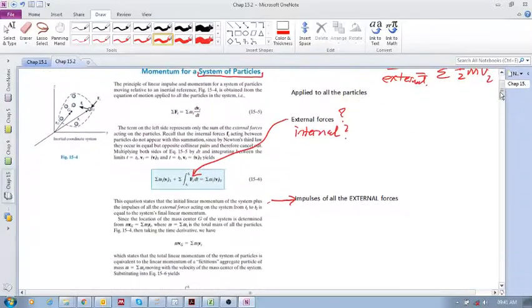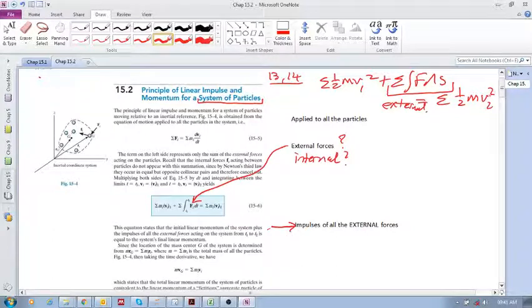We will do some examples on this later. But that's basically the most important principle. It's applied to all the particles. And we only consider the external forces to apply any impulses. This equation states that the initial linear momentum of the system plus the impulses of all the external forces acting on the system from T1 to T2 is equal to the system's final linear momentum. So I think that's okay for now. See you in the next video.